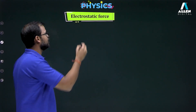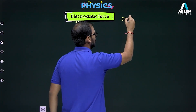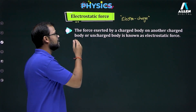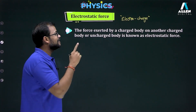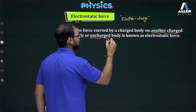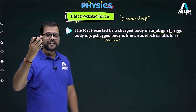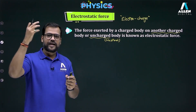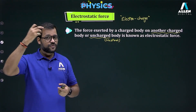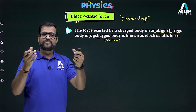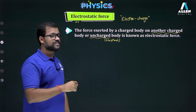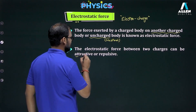Now let's talk about electrostatic force. 'Electro' means charge, so this is the force between charged objects. The definition: the force exerted by a charged body on another charged body or on an uncharged (neutral) body is known as electrostatic force. For example, rubbing a balloon on dry hair makes it negatively charged; bringing it near bits of paper (which are neutral) causes attraction. Rubbing two balloons makes them both negative and they repel each other.